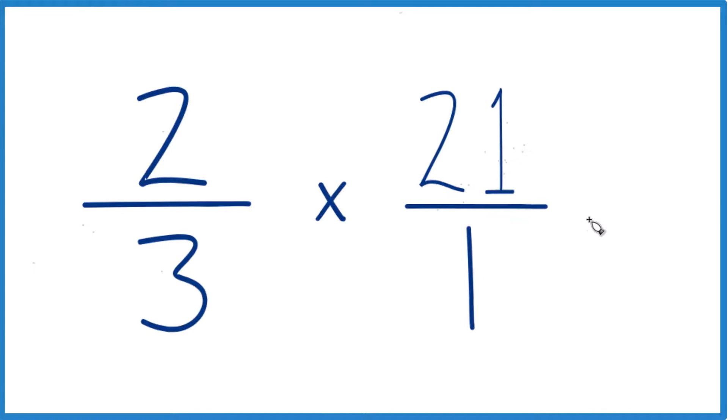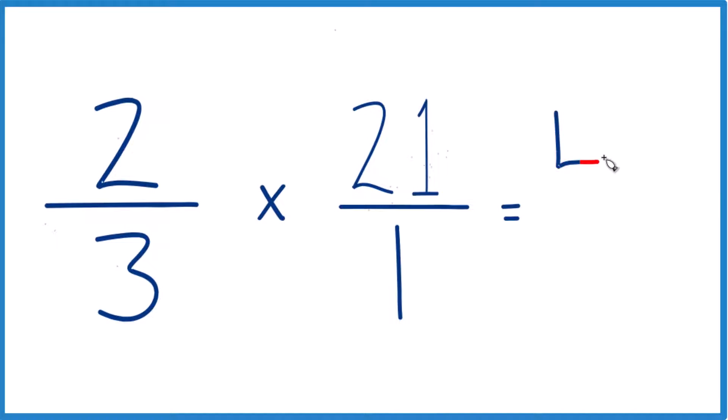Multiply the numerator, so two times 21, that's 42, and then 3 times 1 is 3. So two-thirds times 21, that's 42 over 3.